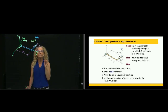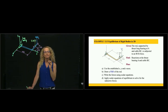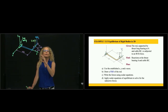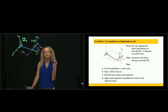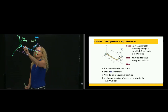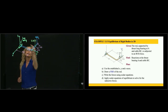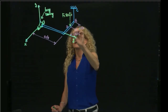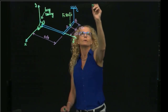Understanding which motions are restricted is very important because that tells us how many reactions the support produces. If a displacement is restricted, it becomes a force in the free body diagram. If a rotation is restricted, it becomes a moment in the free body diagram. We also have a cord that restricts only one motion along the Z axis.